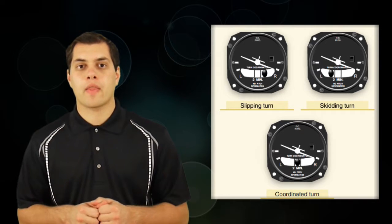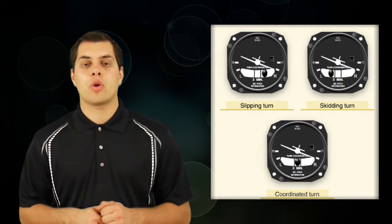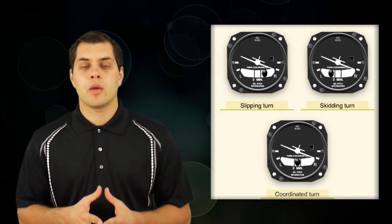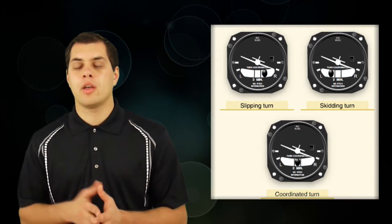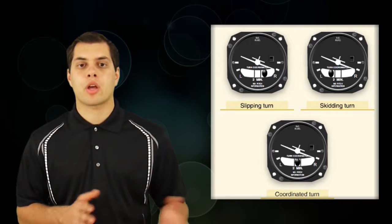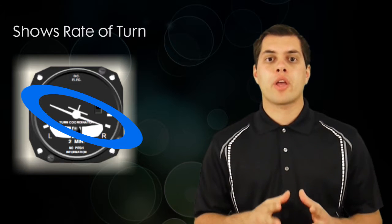Let's say you're in a right-hand turn, and the ball is on the inside of the turn, we call that a slipping turn, because the nose isn't going as fast as it should to keep up with the rate of turn. If the ball is on the outside, we call that a skidding turn.